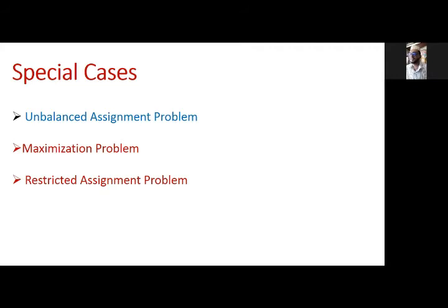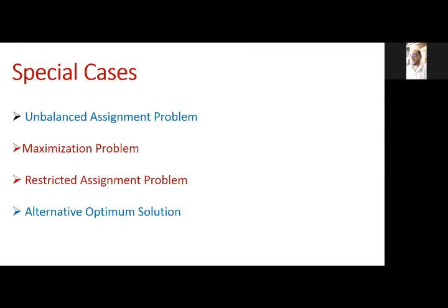The third special case is the restricted assignment problem, where the question specifies that a certain job cannot be assigned to a certain person — for example, a lathe machine operator cannot be assigned to a CNC machine requiring coding, so a dash is marked in front of that combination. The fourth case is the alternate optimum solution. These cases will be clearer when we solve the problems.